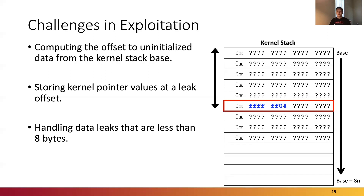On a 64-bit Linux kernel, when a kernel data leak is larger than 8 bytes, we can obtain the values of the whole pointer. However, in many vulnerabilities, the size of memory leak is smaller than 8 bytes, so we cannot obtain a complete pointer value. For handling such small leaks, we reason a possible range of the unknown value through the guess and check method, by which we can identify the base address of the kernel stack.